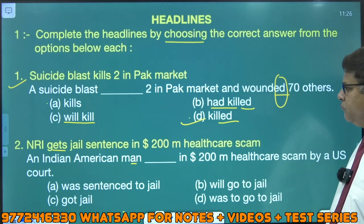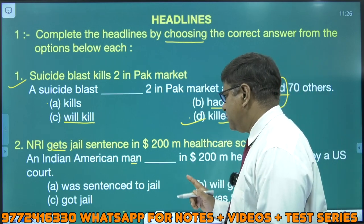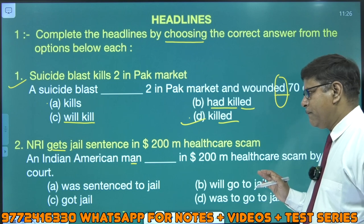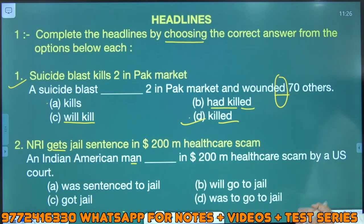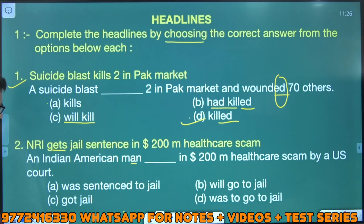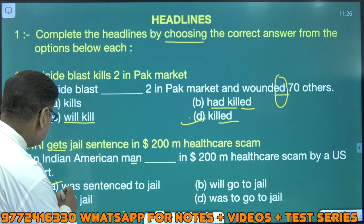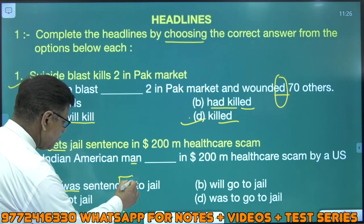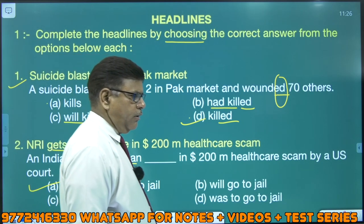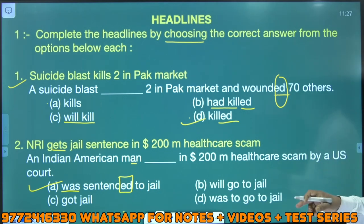Maine aapko ek hint diya. Then discuss second one — try to understand. NRI gets jail sentence in 200 million health scheme — yeh confusion bahut saara yahan diya gaya, ki jail hi mil gaye unko. No — meaning dekhiye. An Indian American was sentenced to jail in 200 million healthcare scheme by a US court. Was — inko yeh saza di gayi, inko yeh nirnay suna diya gaya tha. So yeh meaning clear hua now.